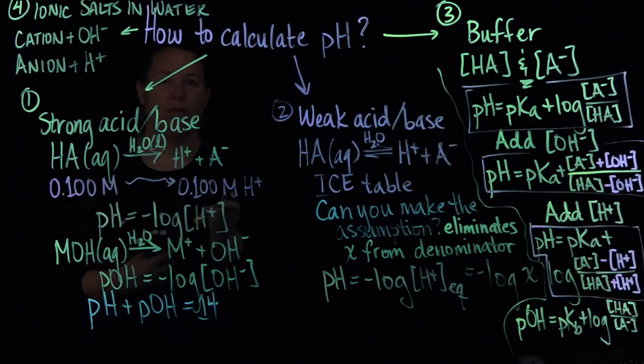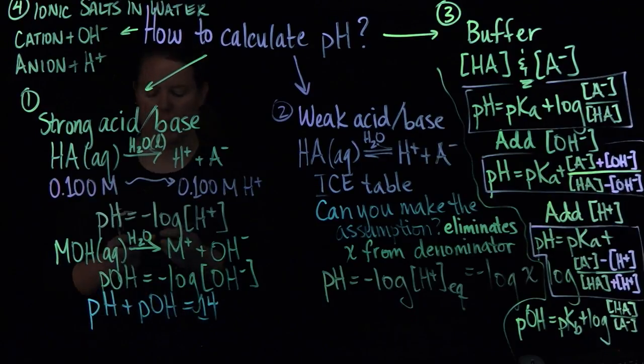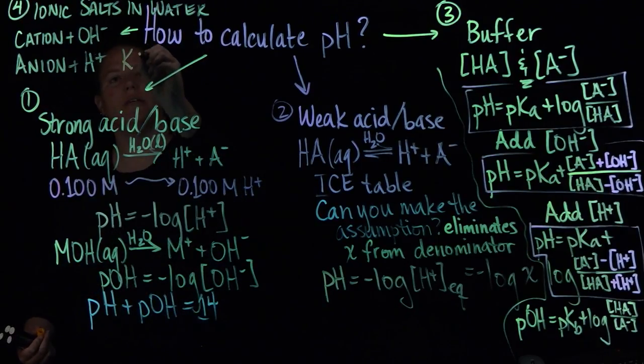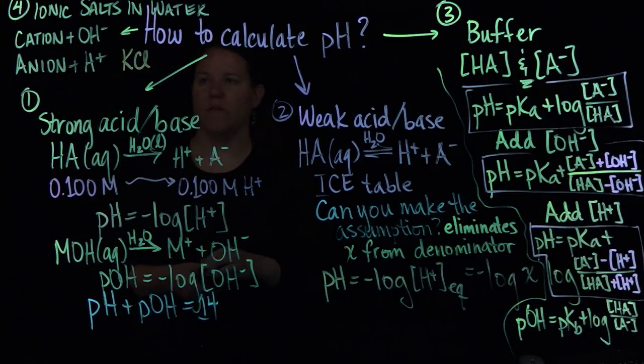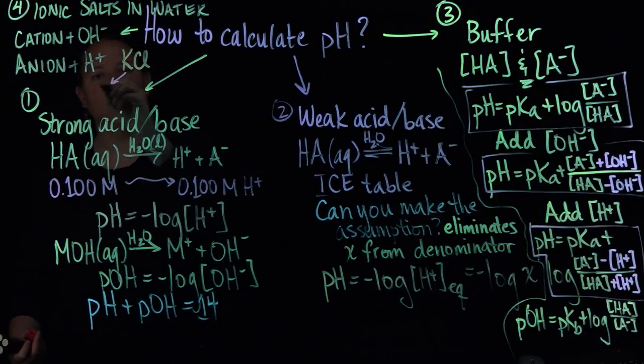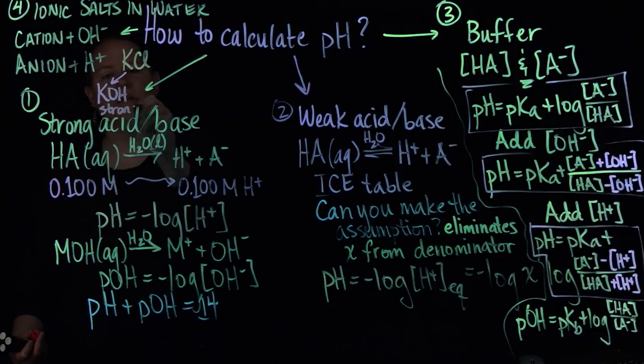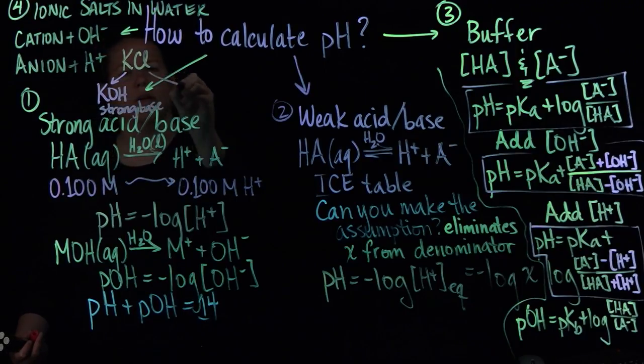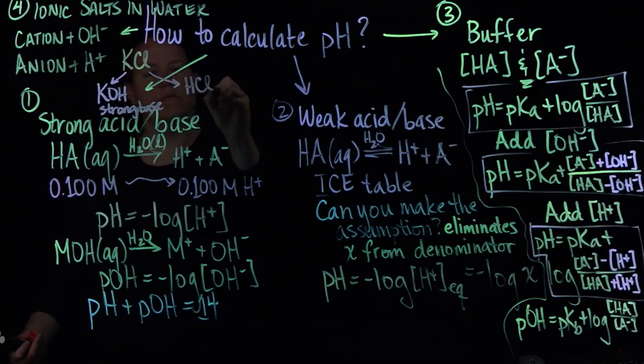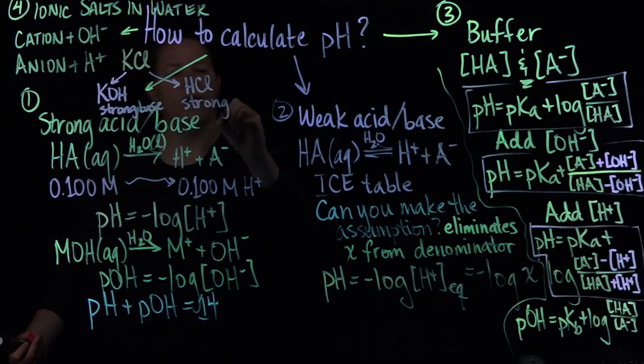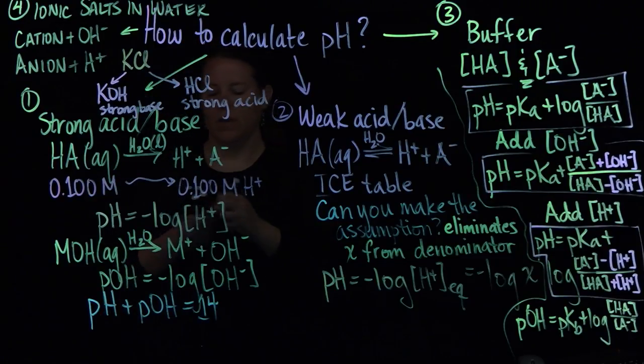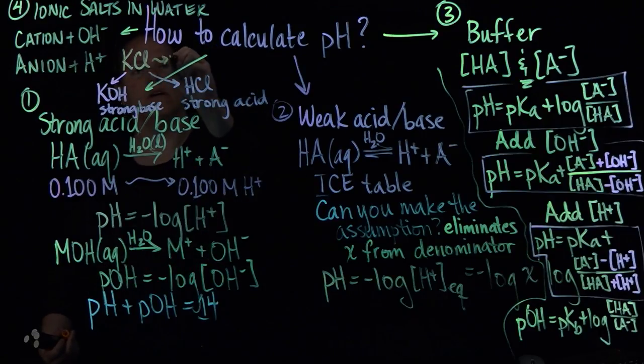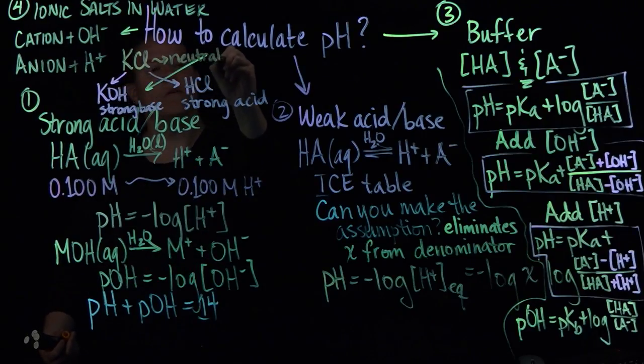So for instance, if, or it may, they may cancel out. So if I had, let's do KCl real quick. With KCl, that would give me, according to what I just did here, KOH, which is a strong base. And it would give me HCl, which is a strong acid. In this case, these two cancel out, and I would assume that when I put KCl in water, it would be neutral.